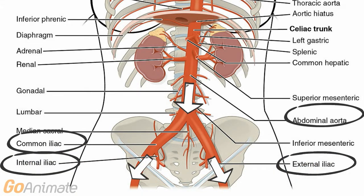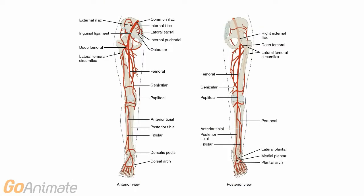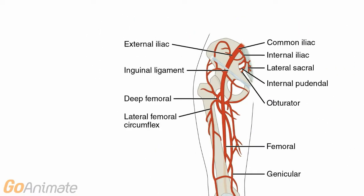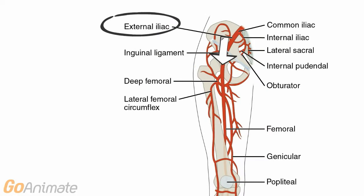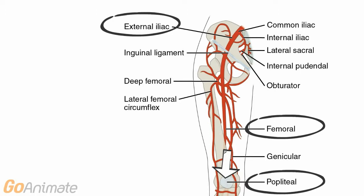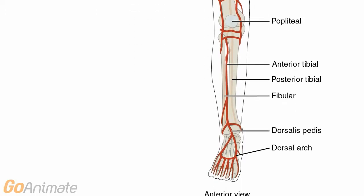The internal iliacs remain inside of the pelvic region. The external iliac emerges from beneath the inguinal ligament to become the femoral. The femoral then moves posterior and becomes the popliteal, which branches into anterior and posterior tibials and fibular arteries.